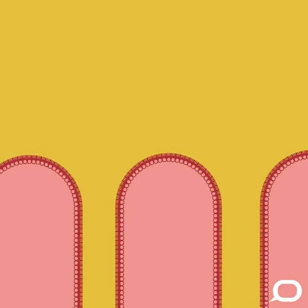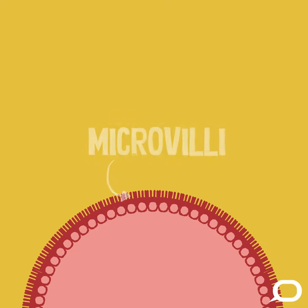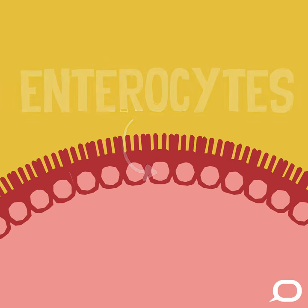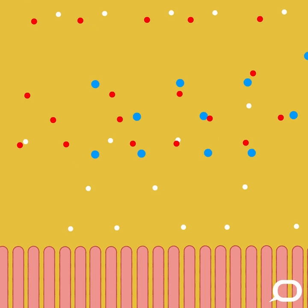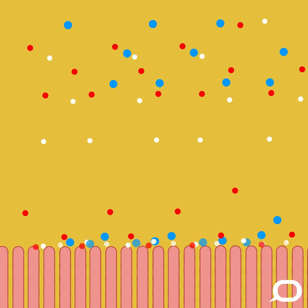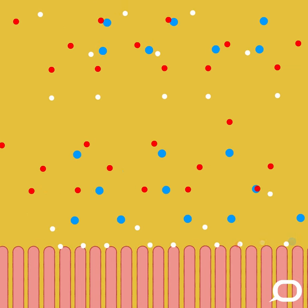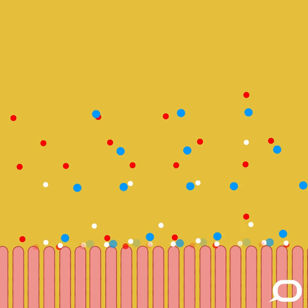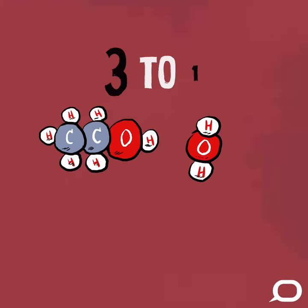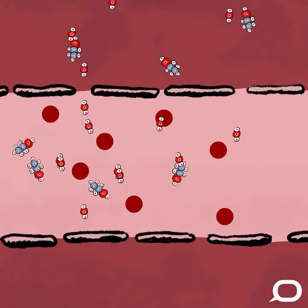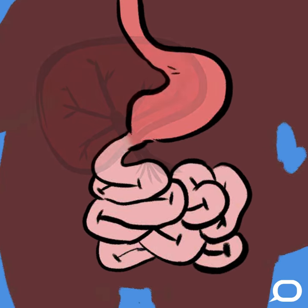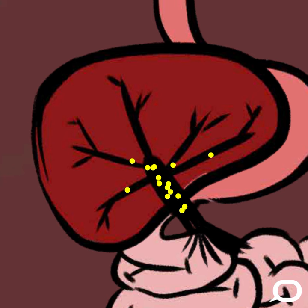The villi are covered by even smaller protrusions called microvilli. The particular cells that absorb nutrients and alcohol are called enterocytes. The presence of villi and microvilli massively increases the surface area to help absorb water and nutrients — such as amino acids, sugars, fats, and alcohol — out of the small intestine and into blood vessels. Because ethanol is only a small molecule, roughly three times as big as a water molecule, it can easily pass through the same channels and pores that water uses to enter the bloodstream.